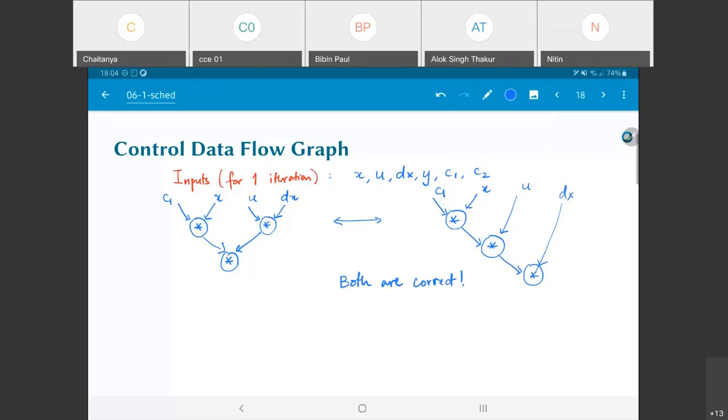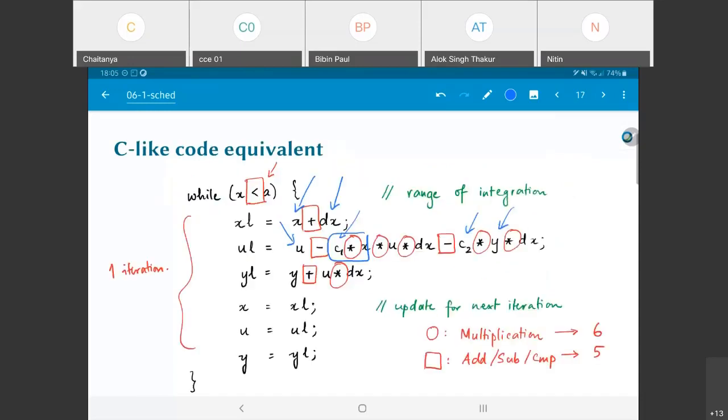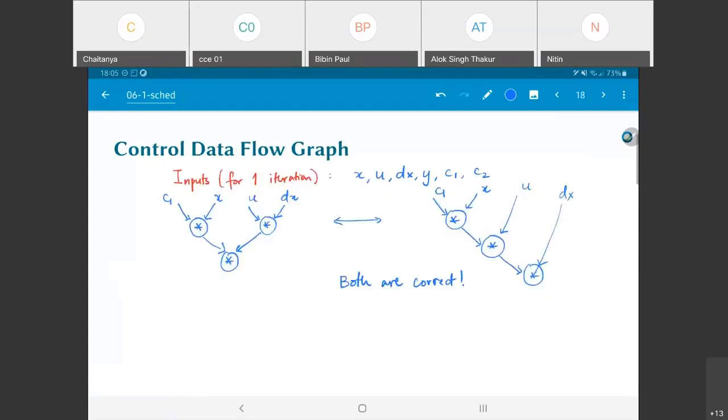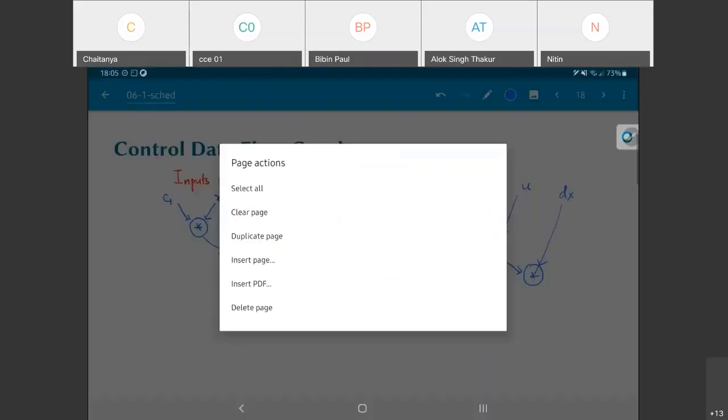What I mean by this is to say that the way by which I construct the data flow graph, given the expression that I have over here, is not unique.